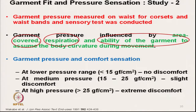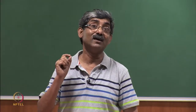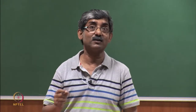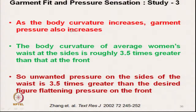At pressure more than 25 gram-force per square centimeter, it gives high discomfort. This refers to overall pressure, not a specific area, and these are normal garments such as waistbands. As the body curvature increases, the garment pressure also increases.